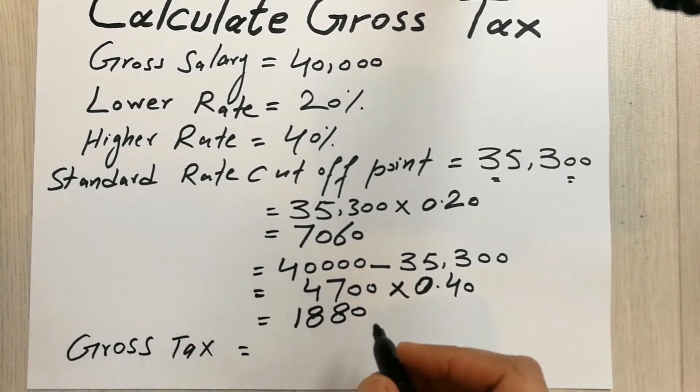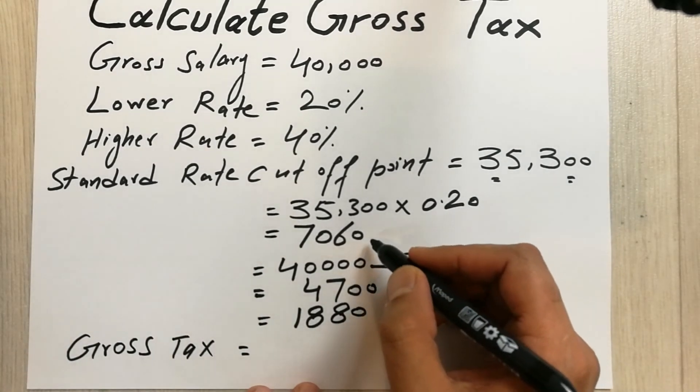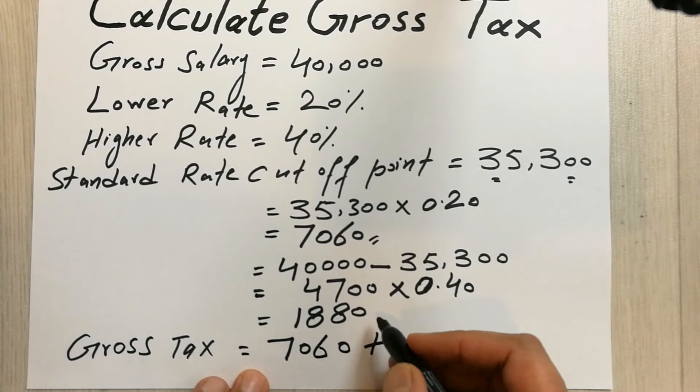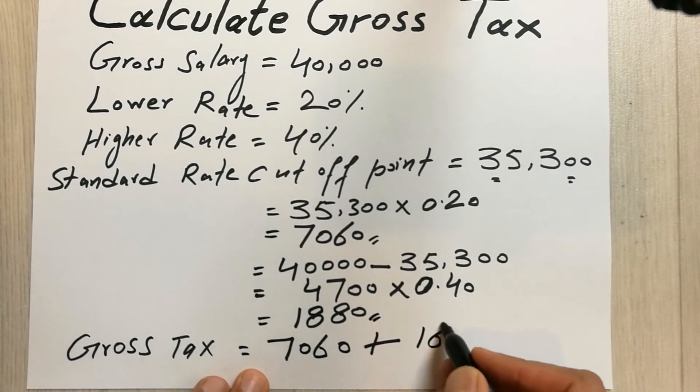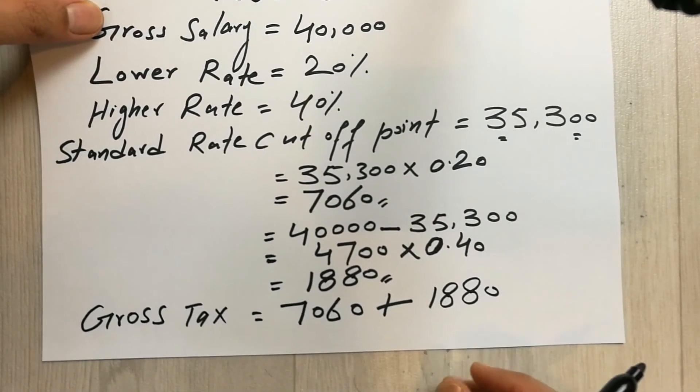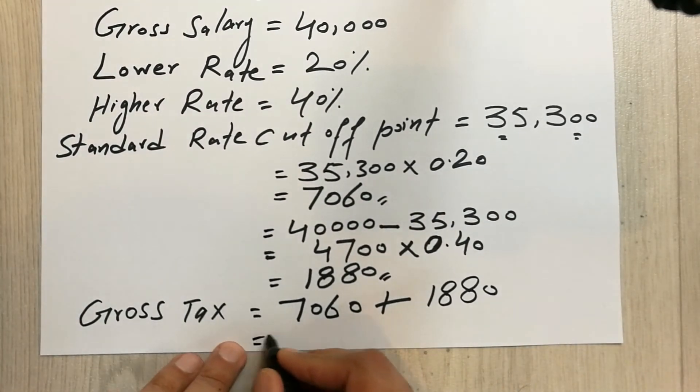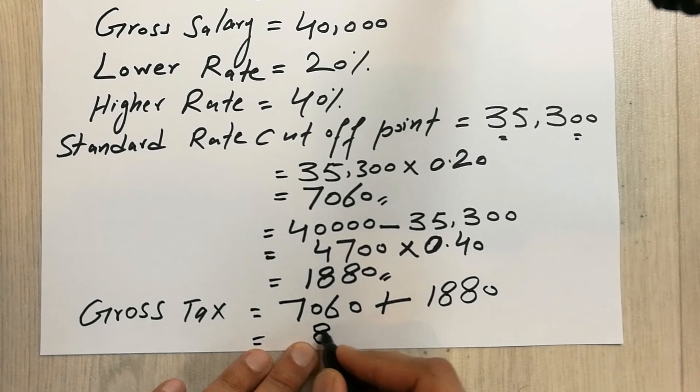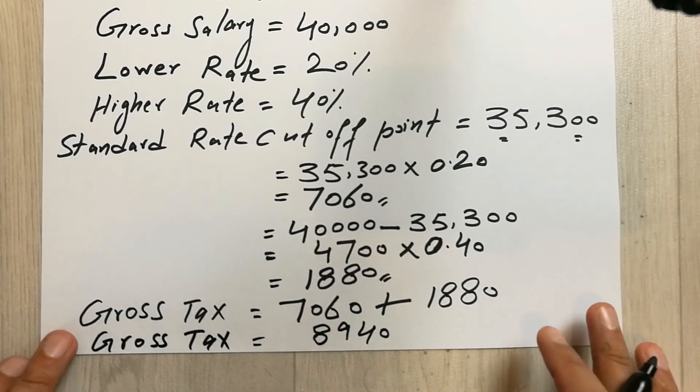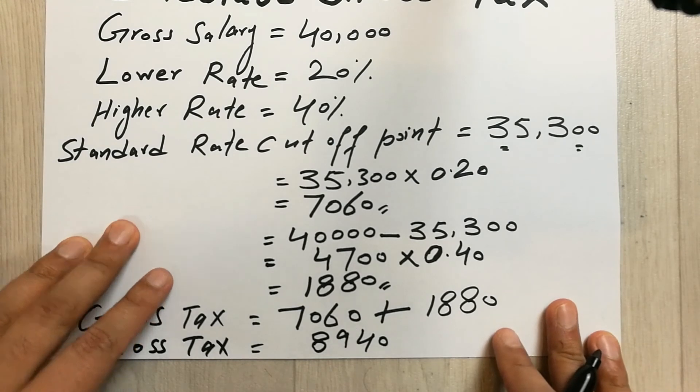Gross tax equals to - we have to use this value which is 7,060 and we have to plus it with 1,880. So our answer will be 8,940. So guys, this is our gross tax.